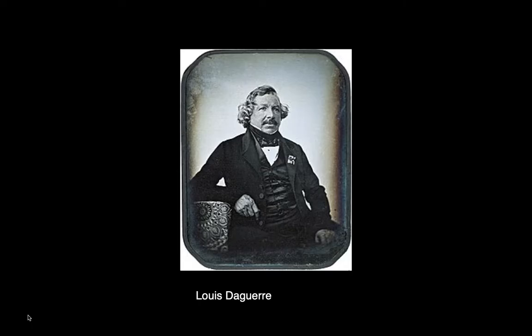A French scientist named Louis-Jacques Mandé Daguerre made the breakthrough when he coated a copper plate with silver iodide, a light-sensitive solution that hardens when light hits it. As light traveled through the aperture, the image stuck to the silver iodide, and Daguerre was able to make a print of that image. He named this invention — that photosensitive copper plate — a Daguerreotype.